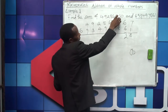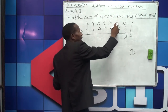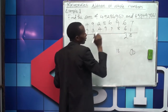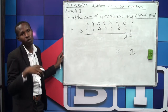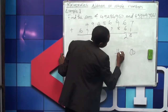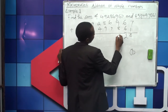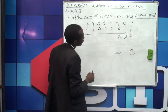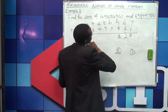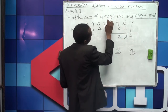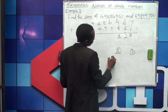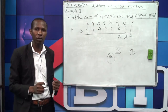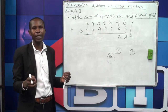Once we regroup the 1, we say 1 plus 9 is 10, plus 8 is 18. After getting 18, we are not supposed to write it at one place value either. So we write the last digit, 8, and regroup the 1 to the next place. Then 1 plus 6 is 7, plus 7 is 14. Again we write 4 and regroup the 1.